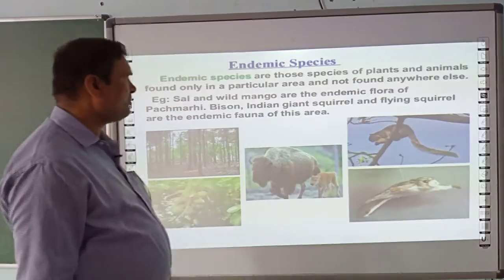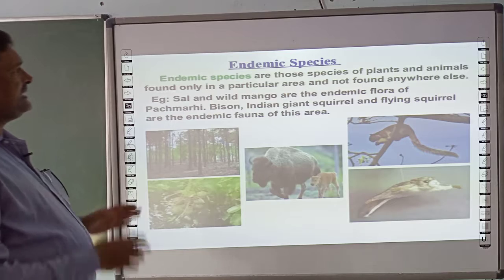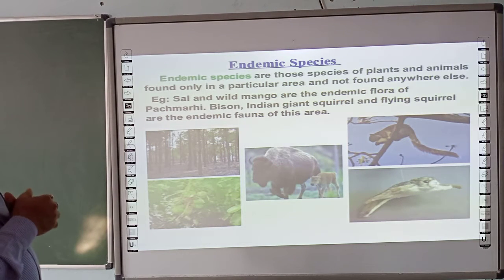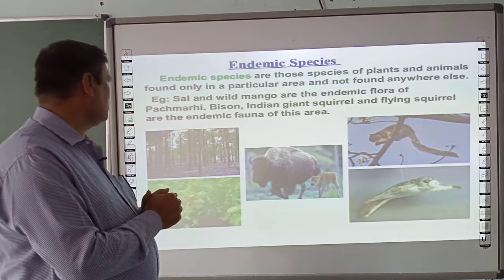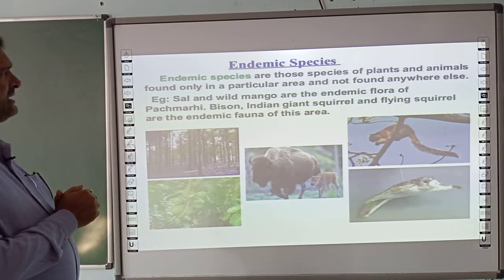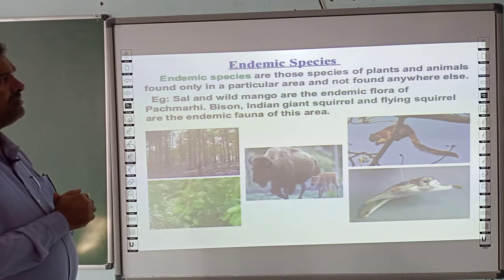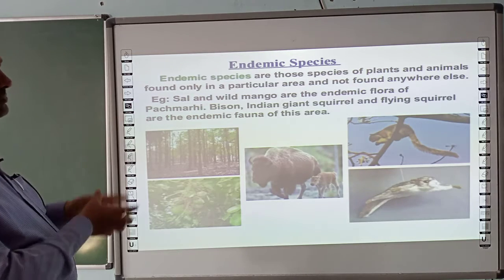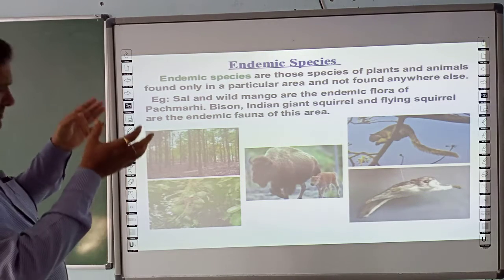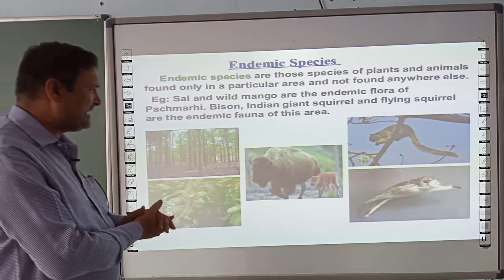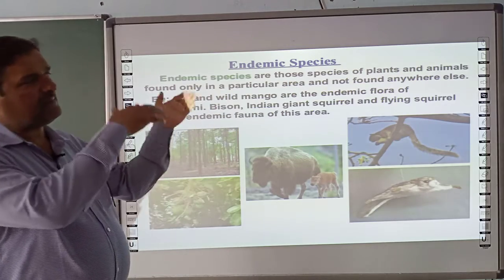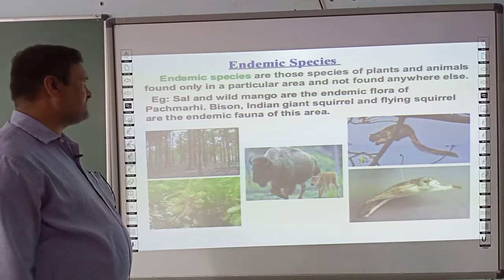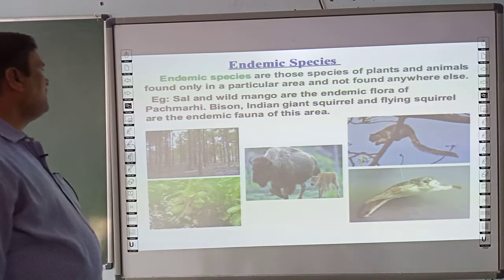These are called endemic species. Endemic species are plants and animals found only in a particular area and not found anywhere else easily. So if an animal or plant is found in a certain area but cannot be found in another area, we call it an endemic species. For example, sal and wild mango are endemic flora.